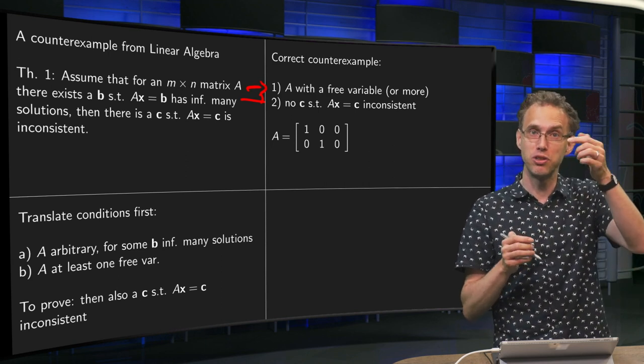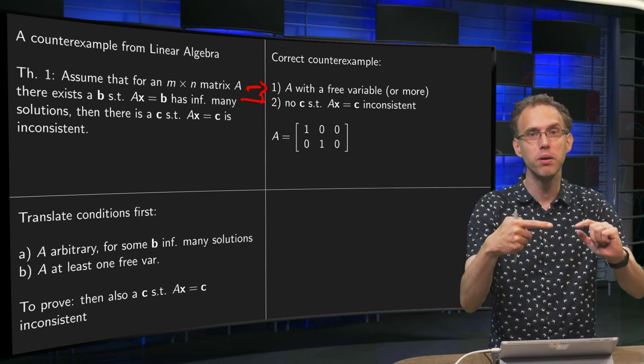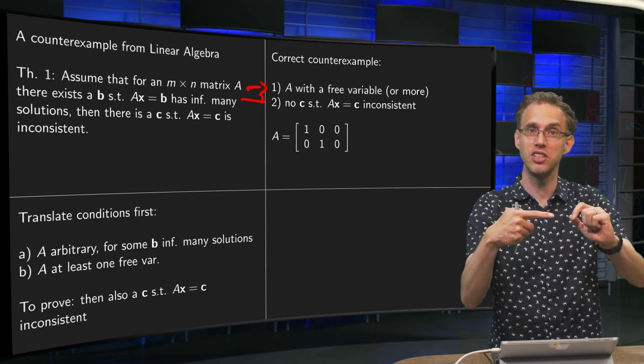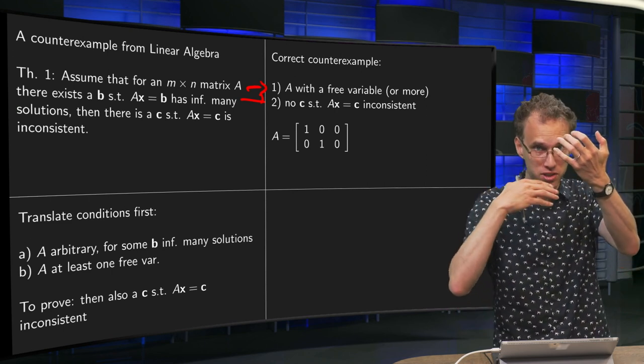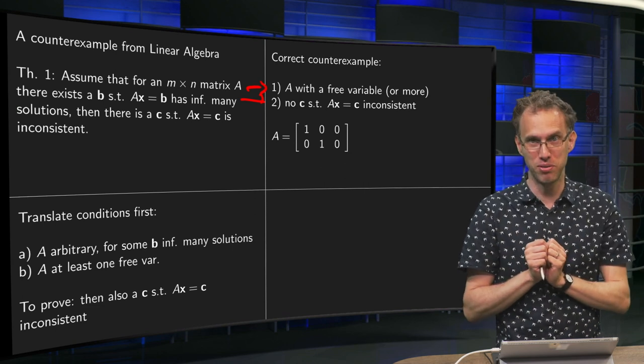The theorem tells you that if you have such an A, there will be a C such that you become inconsistent. So counterexample, you have such an A, but Ax = C can never become inconsistent.